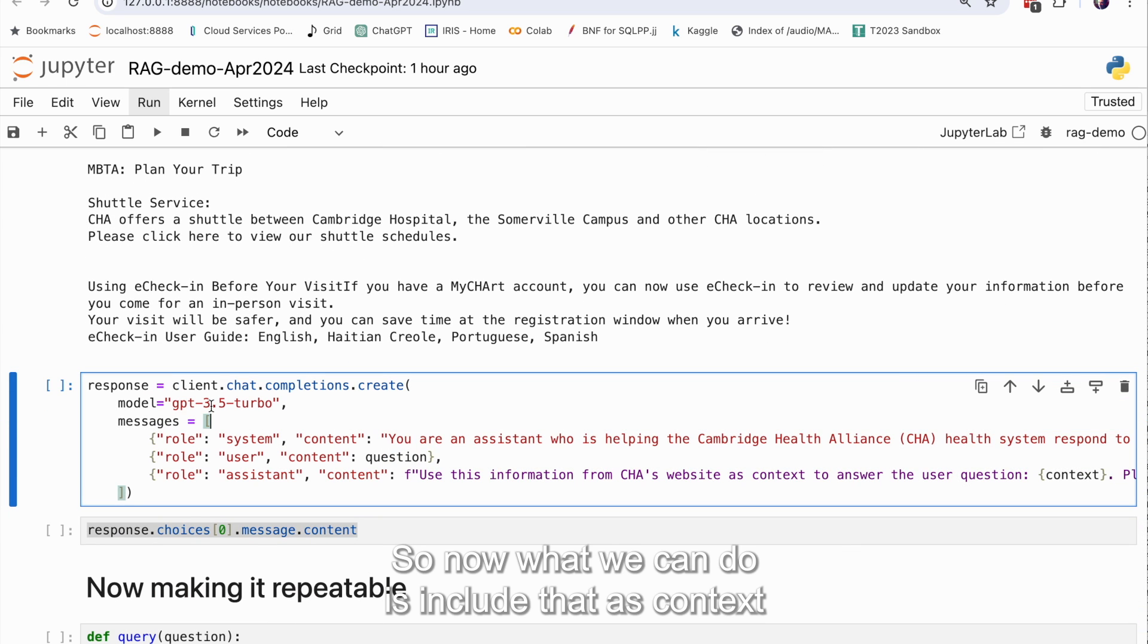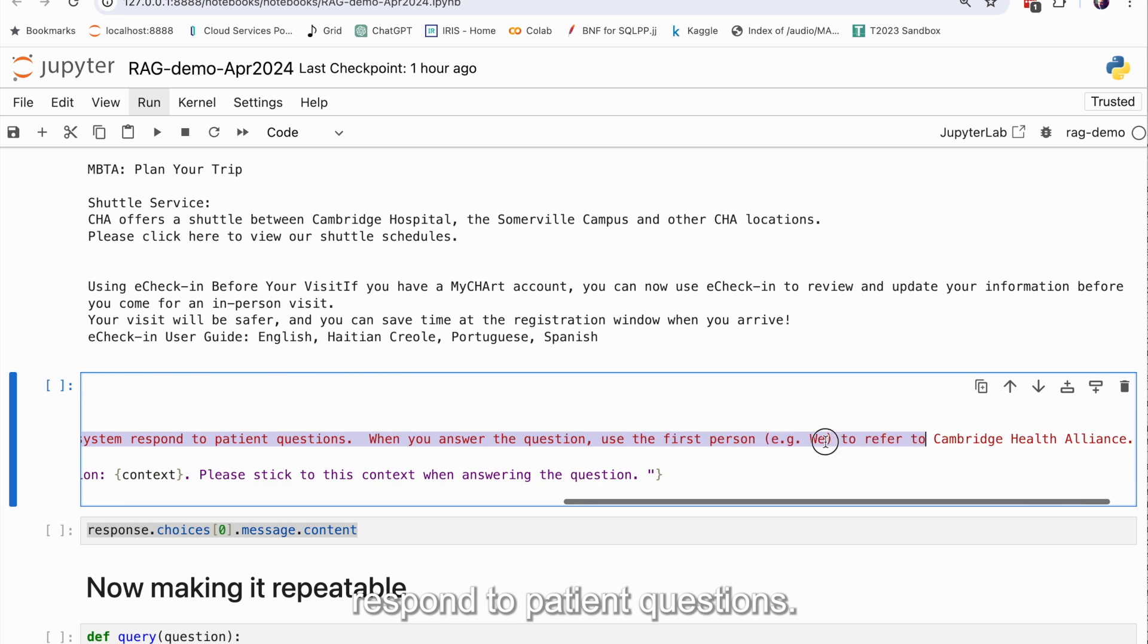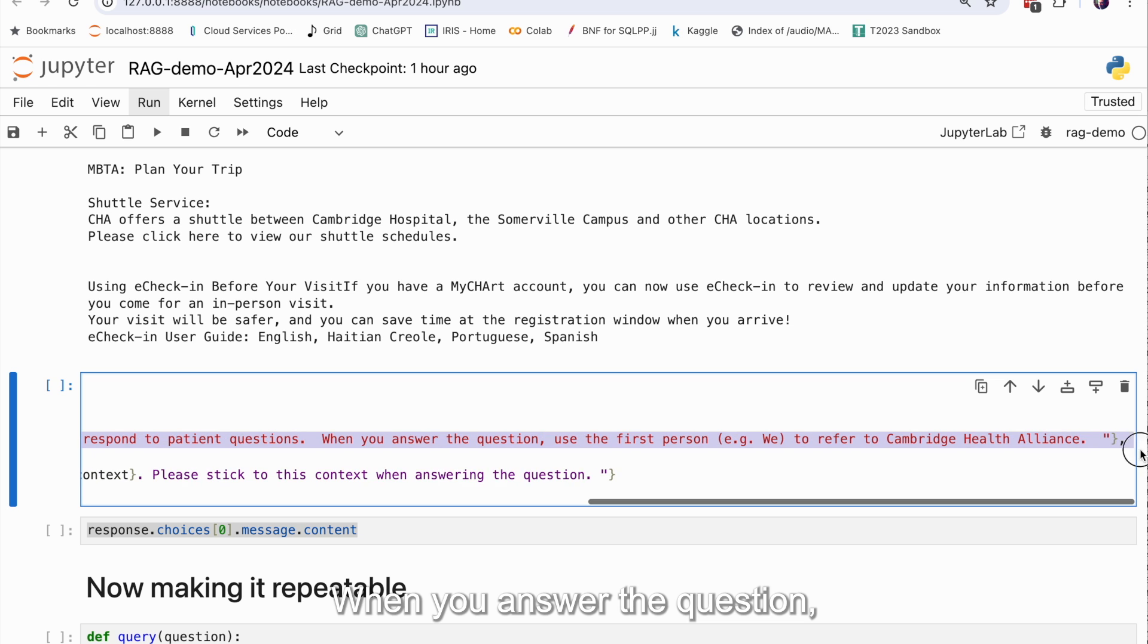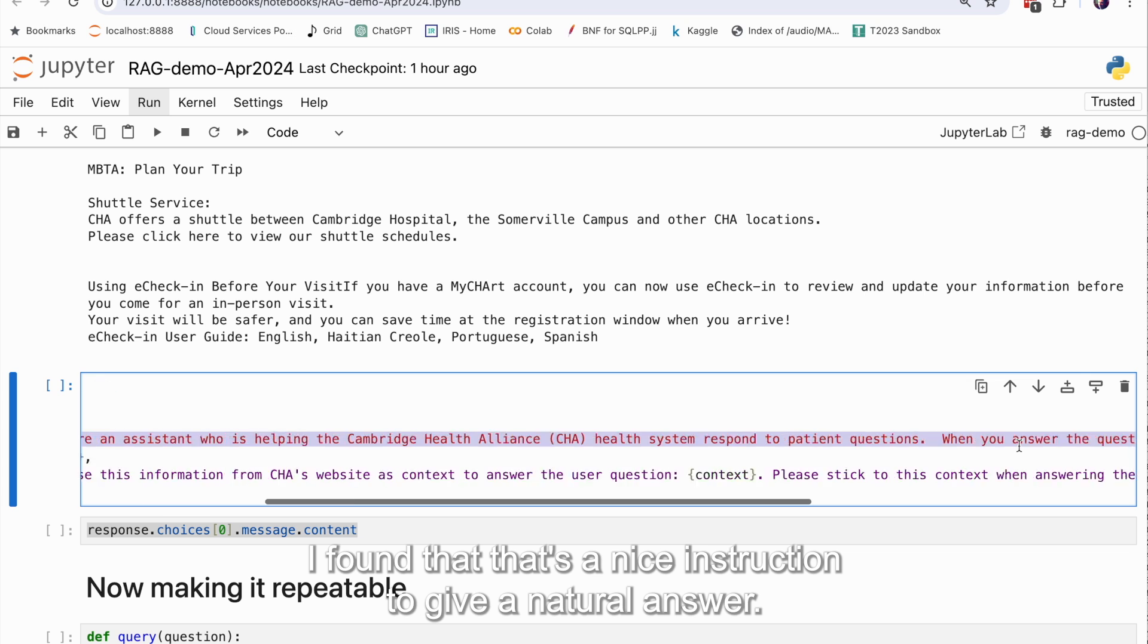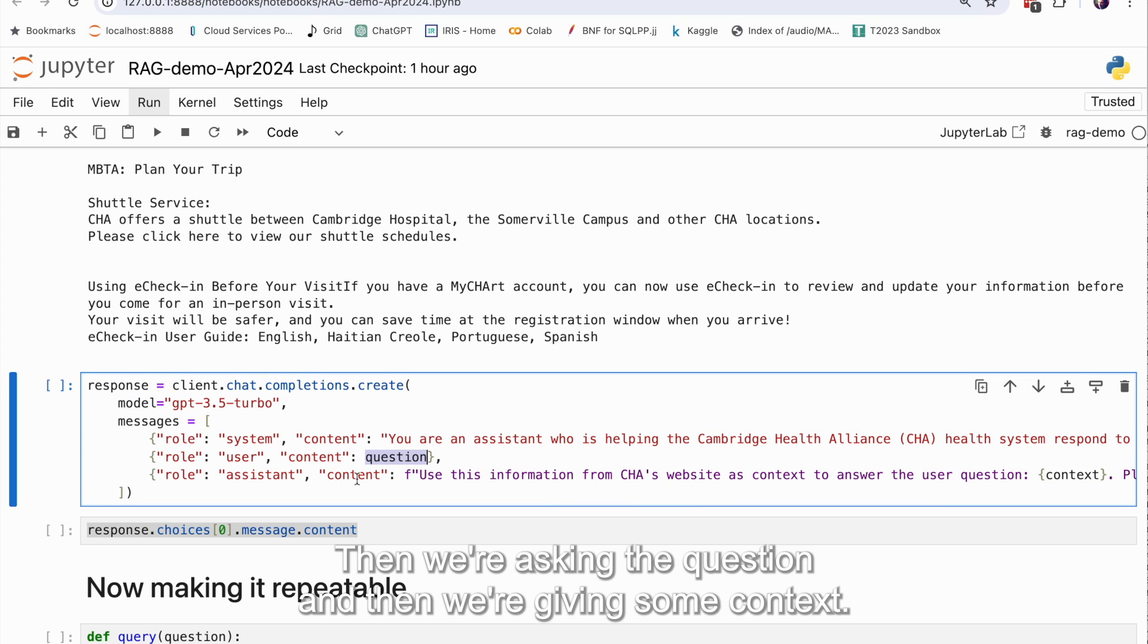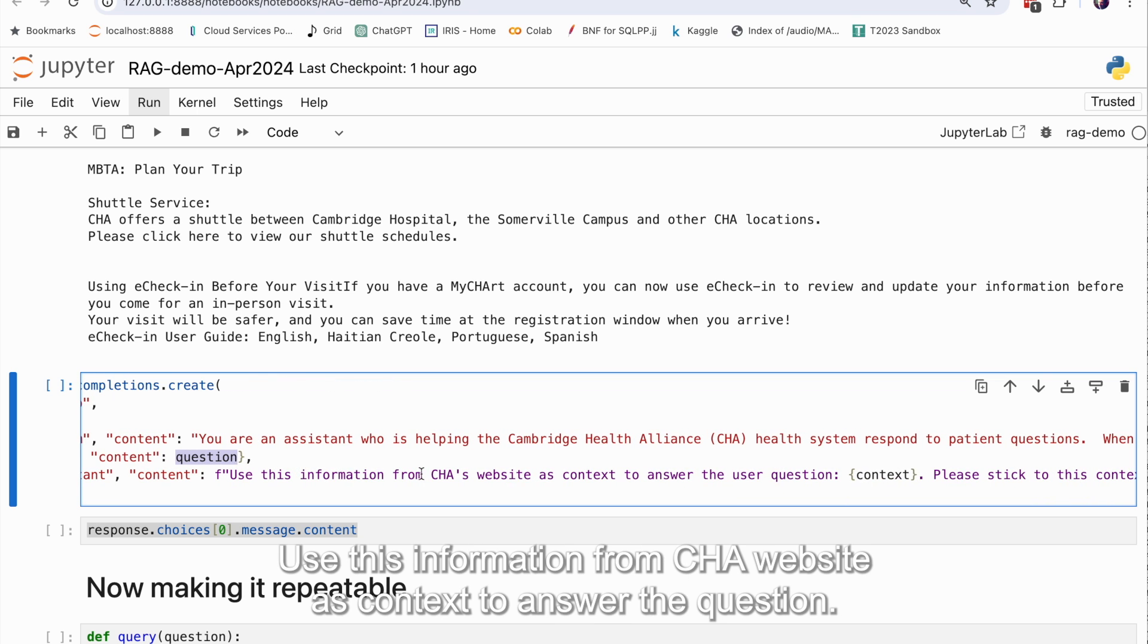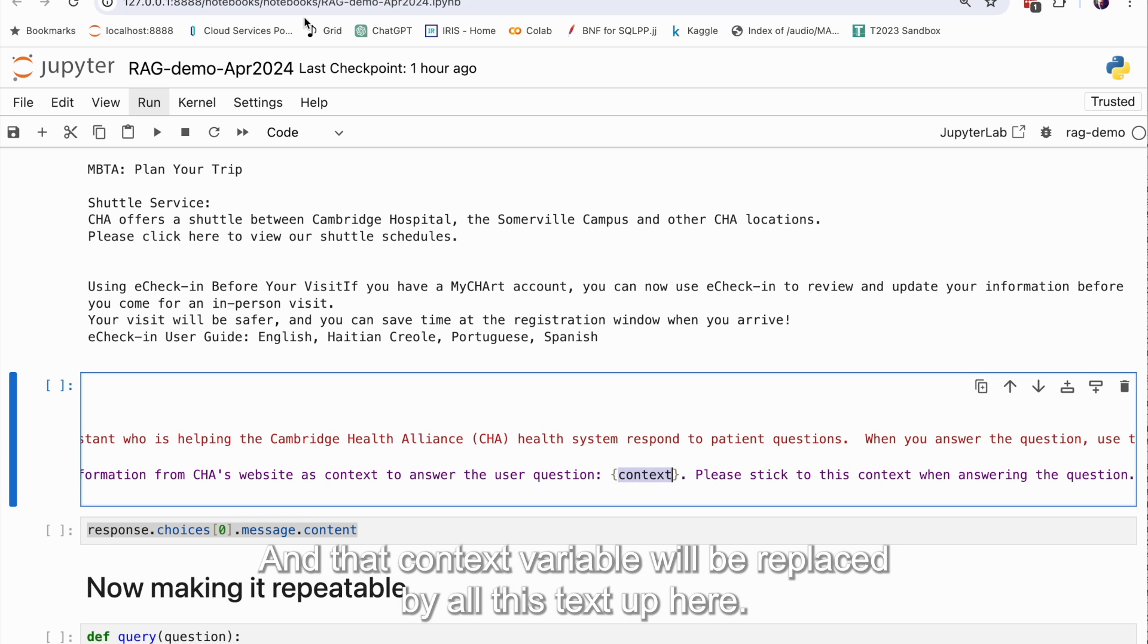So now what we can do is include that as context. So this kind of completes this RAG approach. So now we have an instruction. You are an assistant helping the Cambridge Health Alliance respond to patient questions. When you answer the question, use the first person to refer to Cambridge Health Alliance. So I found that that's a nice instruction to give a natural answer. Then we're asking the question, and then we're giving some context. Use this information from CHA's website as context to answer the question.